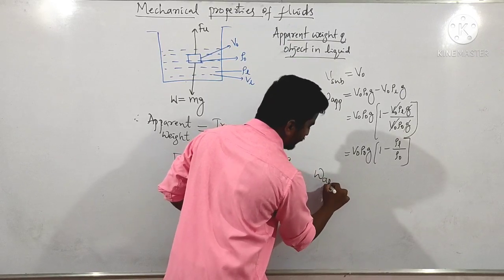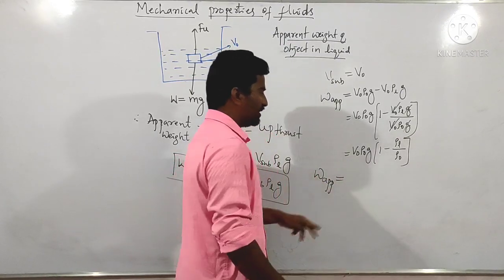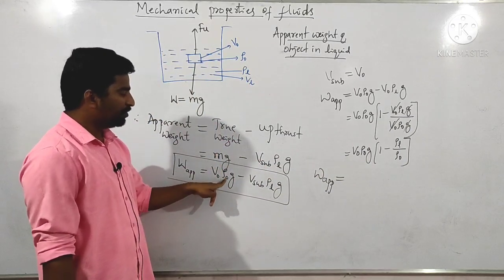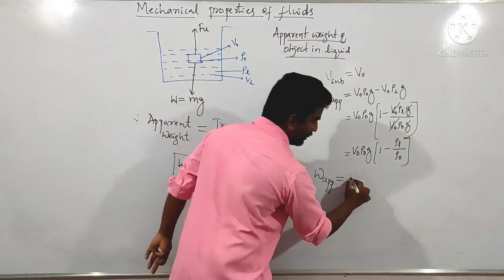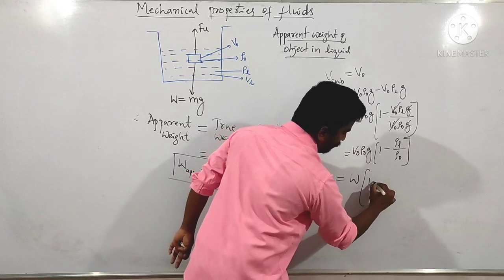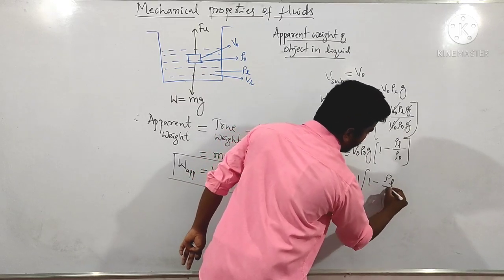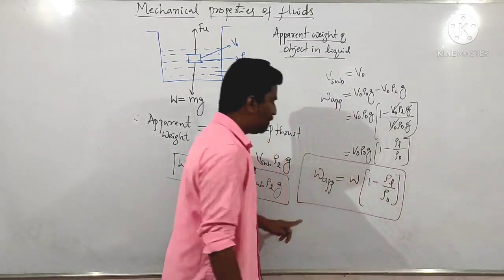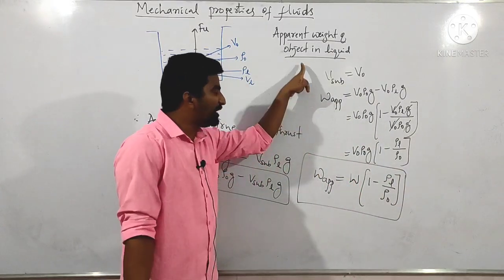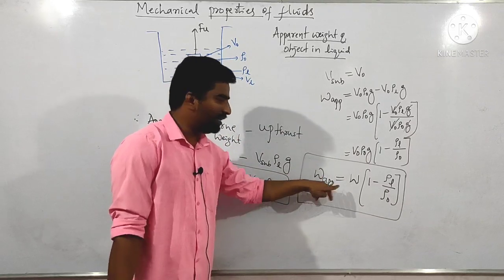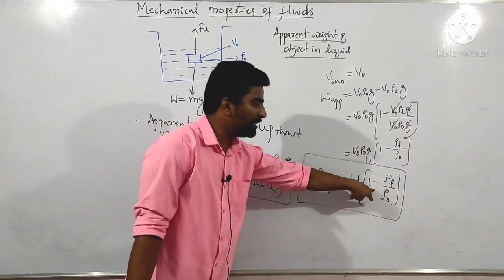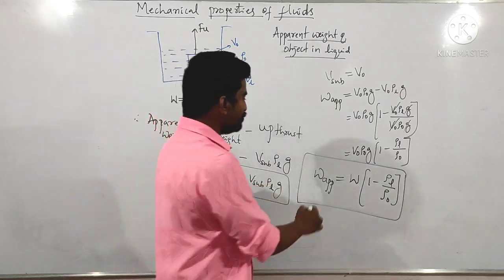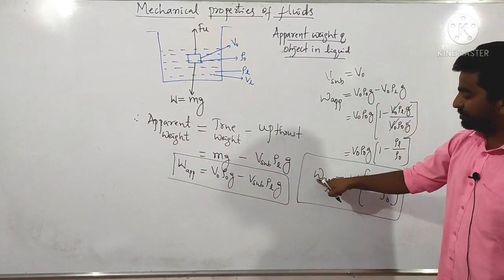The remaining expression is V₀ρ₀g multiplied by (1 minus density of the liquid divided by density of the object). So apparent weight of the object in liquid equals true weight W₀ multiplied by (1 minus ρ_liquid divided by ρ_object). This is the very famous equation to calculate the apparent weight of an object placed in a liquid.